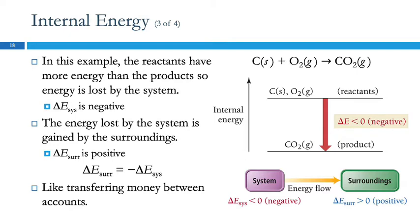So the reactants had more energy than the products — energy is lost by the system, so delta E for the system is negative. The energy lost by the system is gained by the surroundings, so delta E for the surroundings is positive. The change in energy for the surroundings and the system are the same value, but opposite in sign. If I sell you this calculator for $20, you give me $20 — it's negative $20 on your account and positive $20 on mine. It's the same number.